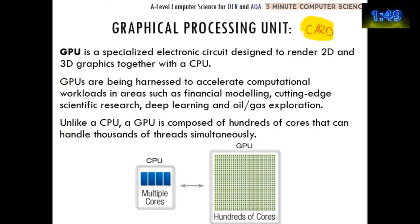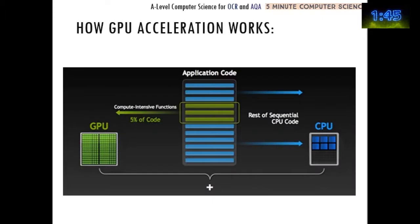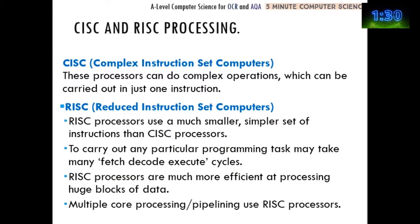Here's a quick diagram to show how that works: you might have various lines of code available, but the code that's intensive in terms of graphics is passed on to the GPU, whilst all the other code is executed by the CPU.